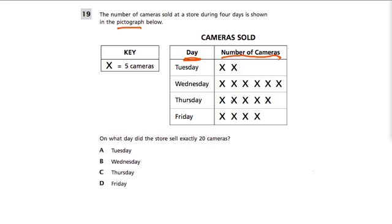Here our picture is simple. Every time you see an x, that represents some number of cameras. To figure it out, look at the key — a key tells you in a pictograph what the symbol means. It says x equals five cameras. So every time you see an x, that means they sold five cameras on that day.